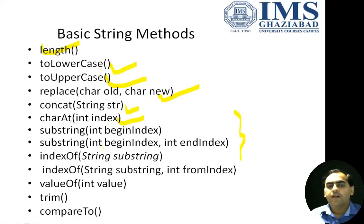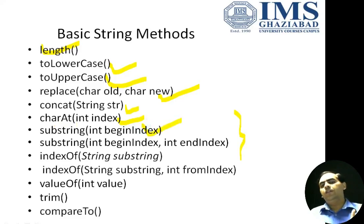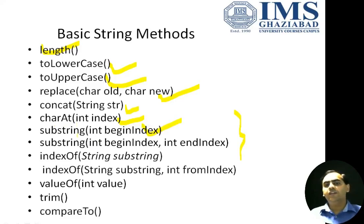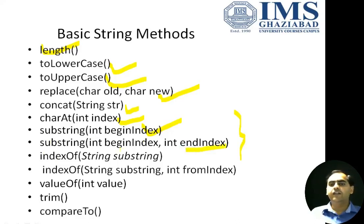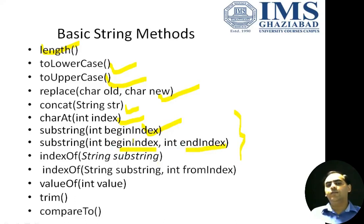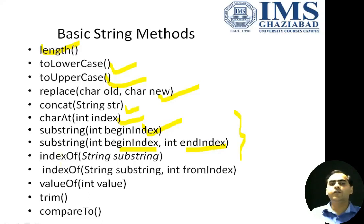The substring method is used to find a subset of a string. There are two versions. First, substring(int beginIndex) finds the substring from the given index to the end of the string. Second, substring(int beginIndex, int endIndex) finds the substring from beginIndex up to one less than endIndex. For example, if beginIndex is 2 and endIndex is 6, the substring is found from index 2 to 5, since endIndex means 6 minus 1.